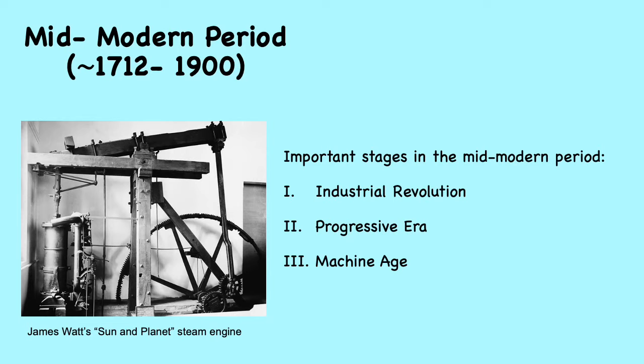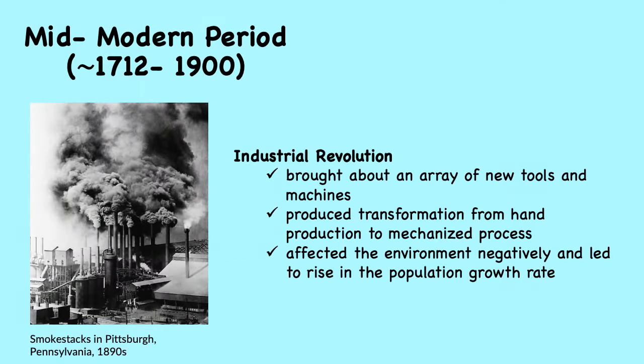This photo shows James Watt's steam engine, which was instrumental in the development of science and technology in the mid-modern period. The mid-modern period consists of the Industrial Revolution, the Progressive Era, and the Machine Age. The Industrial Revolution in the 1700s began when the first viable steam engine was introduced by Thomas Newcomen at Dudley Castle coal mine in 1712. In 1765, James Watt greatly improved the Newcomen engine, and this invention was crucial to the industrialization of modern civilization.